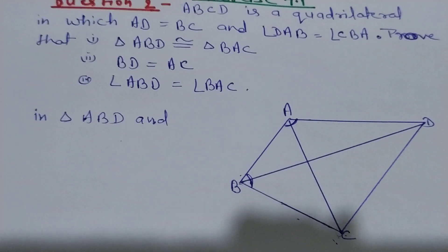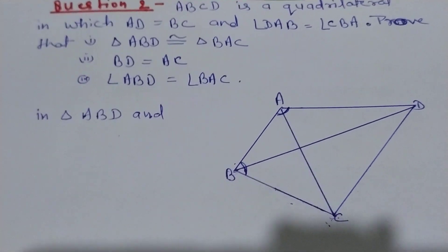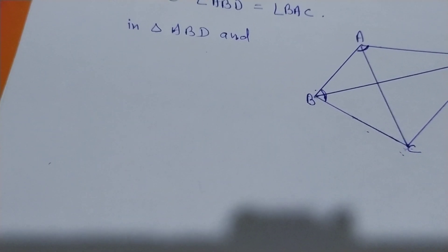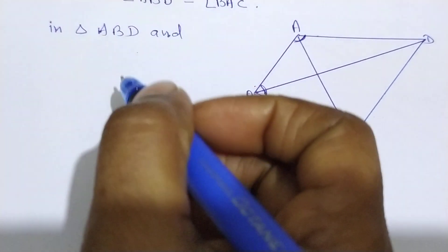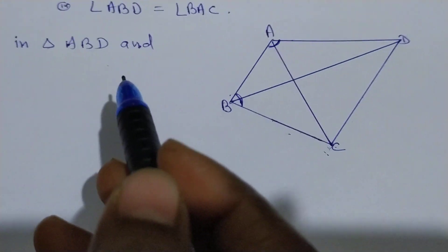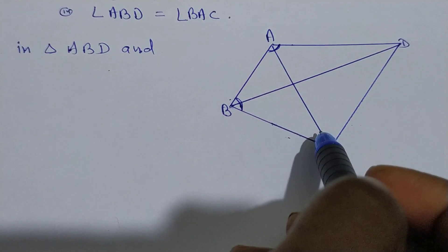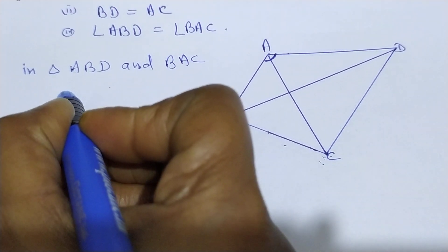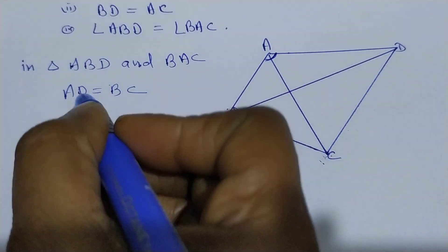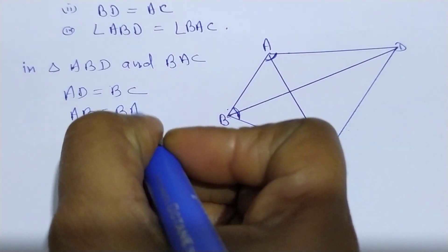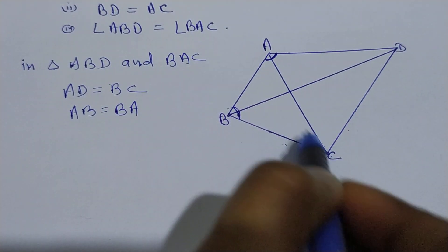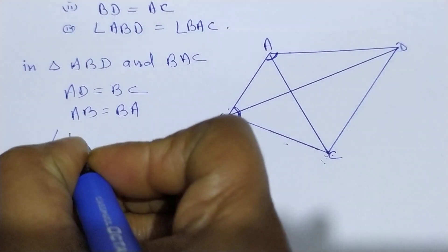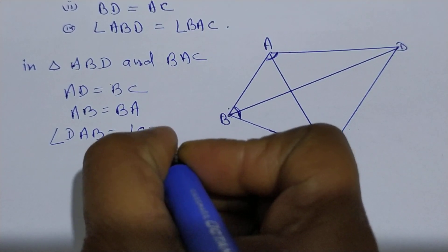So first we will see in triangle ABD and triangle BAC. We have AD equal to BC, which is given. And AB equal to BA, which is common. This side is common in both triangles. And we are also given angle DAB equal to angle CBA, this angle and this angle.